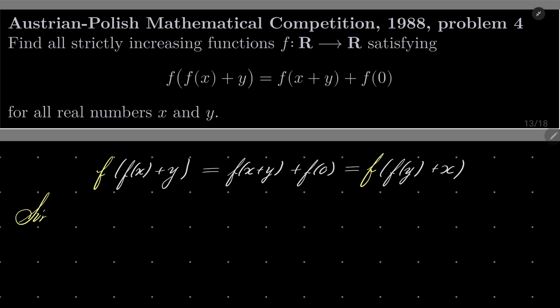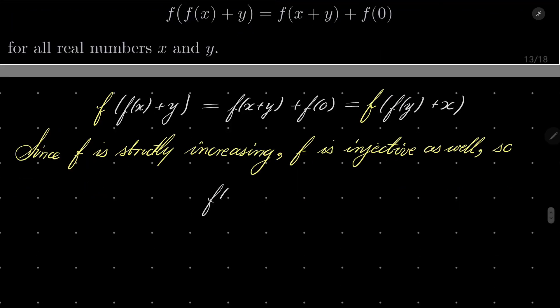Alright, and now let's notice that here we have f of something equals f of something else. Well, since f is strictly increasing, f is injective as well. So f of x plus y equals f of y plus x for every x and y.